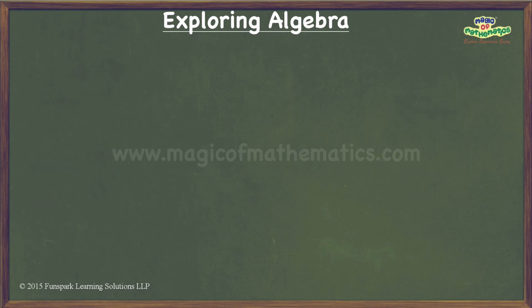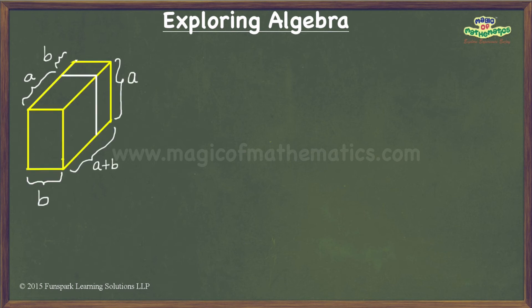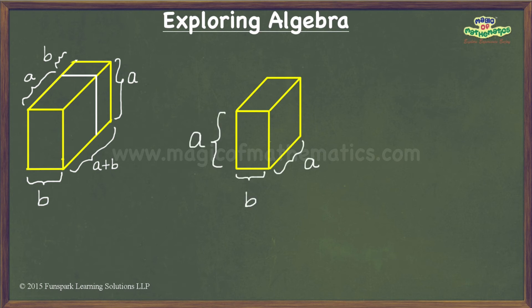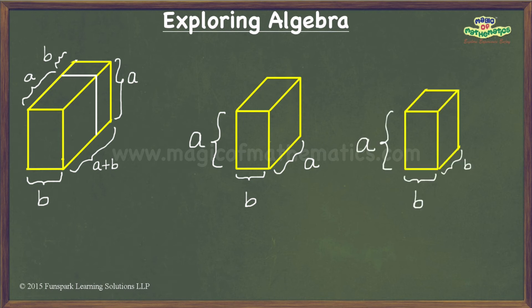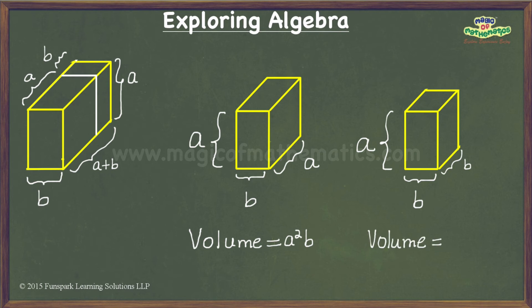When we cut the second cuboid, we get a cuboid having dimensions a units by b units by a units, with volume a squared b, and another cuboid having dimensions a units by b units by b units, with volume ab squared.